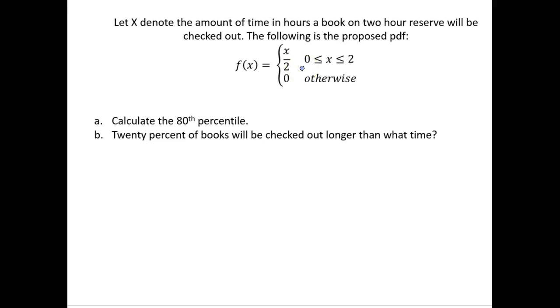So to calculate the 80th percentile we want to integrate from our lower bound up to then the 80th percentile, but we don't know that value so we're going to give it a placeholder. We do know that if we integrate over our PDF that this will have to be equal to 0.8 because that's the probability that falls below this value.